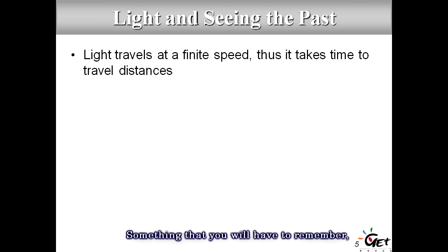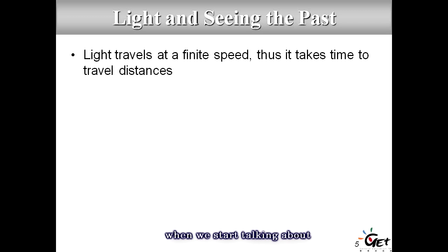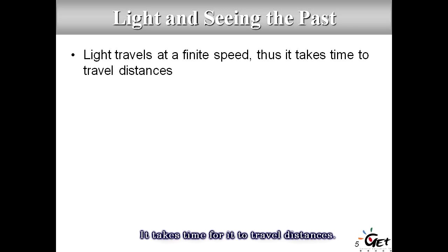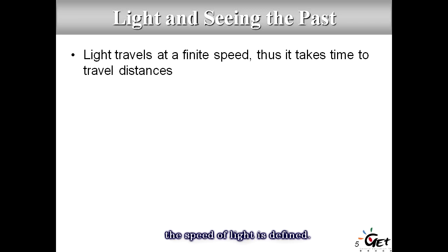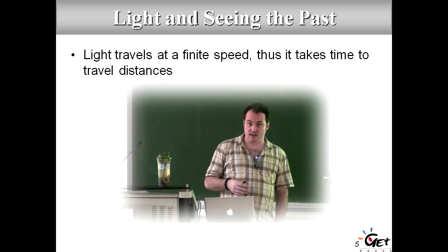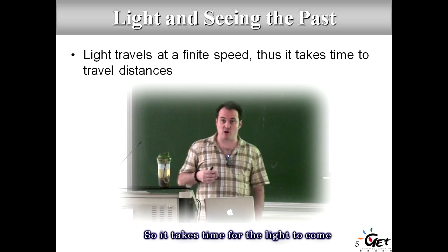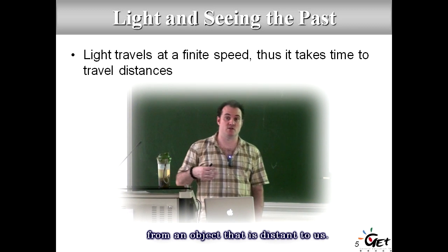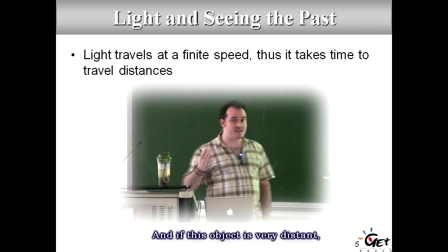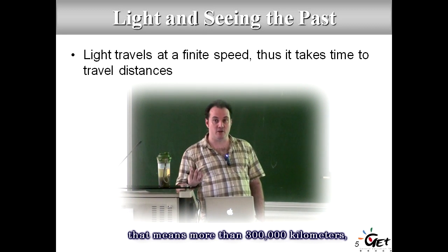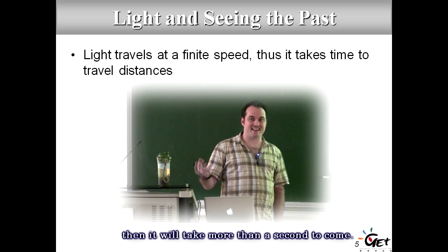Something important to remember, especially when we talk about the universe and galaxies, is that light travels at a finite speed. It takes time to travel distances. The speed of light is a constant: 300,000 kilometers per second. So it takes time for light to come from a distant object to us. If an object is more than 300,000 kilometers away, it takes more than a second for the light to arrive.